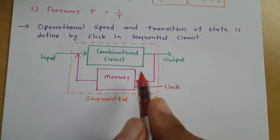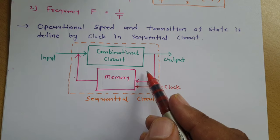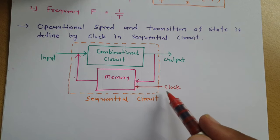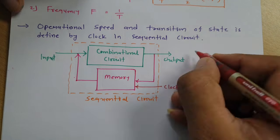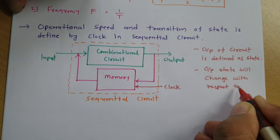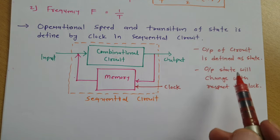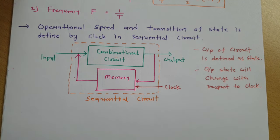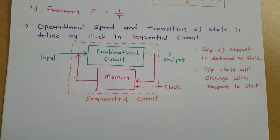One should know: the output of the circuit is defined by state, and the output state will change with respect to the clock signal. Now I will explain how many types of triggering are provided by the clock. Basically there are two types of triggering with clock: one is edge triggering and the second is level triggering.